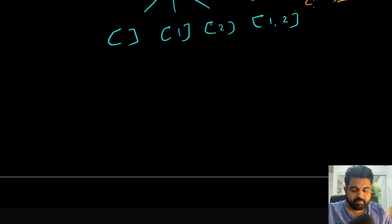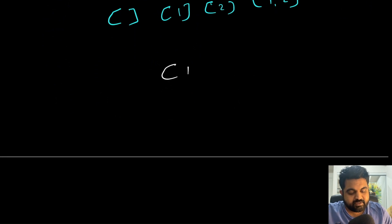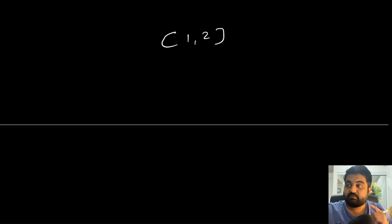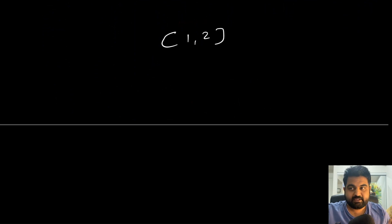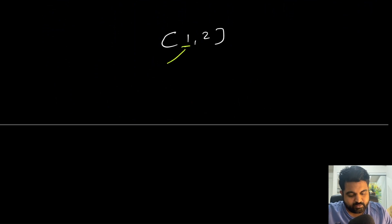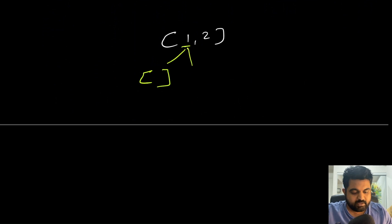Let me explain my approach using this example. We are given two elements as input. To generate the first subset we have two options as we iterate over the array. The moment we encounter element one, we decide whether to include it or not. If we don't include one, we get an empty list. If we include one, we get a subset with just one.